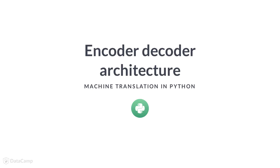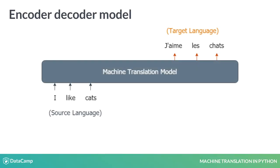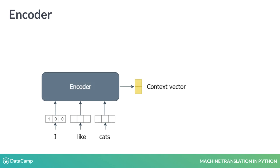Now you will learn about the encoder-decoder architecture in more detail. A machine translation model works by first consuming the words of the source language sequentially and then sequentially predicting the corresponding words in the target language. However, under the hood, it is actually two different models: an encoder and a decoder.